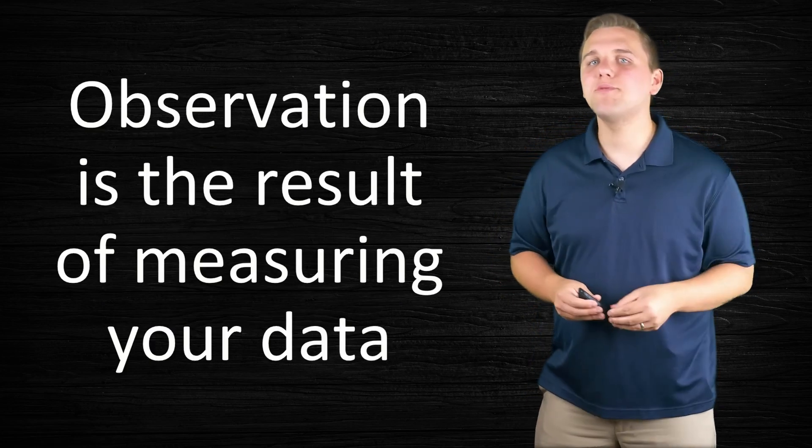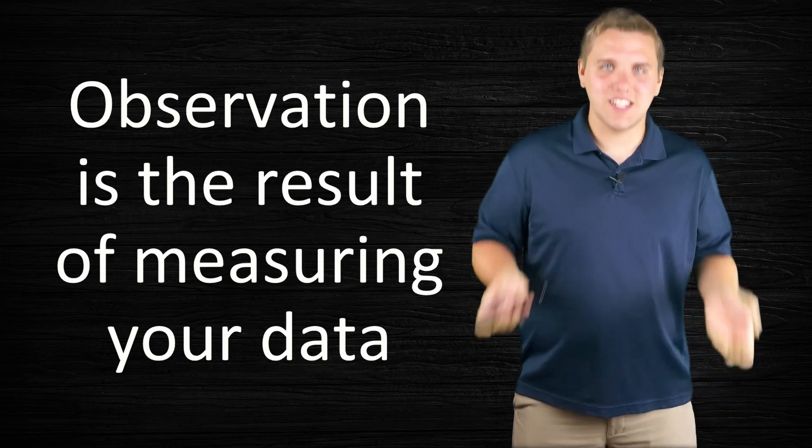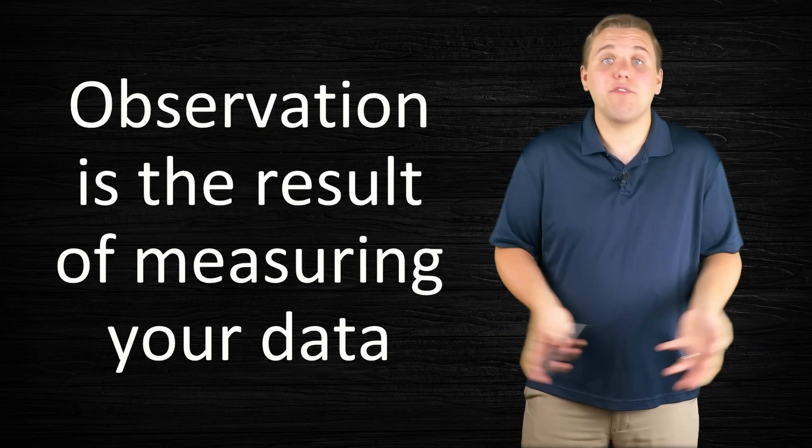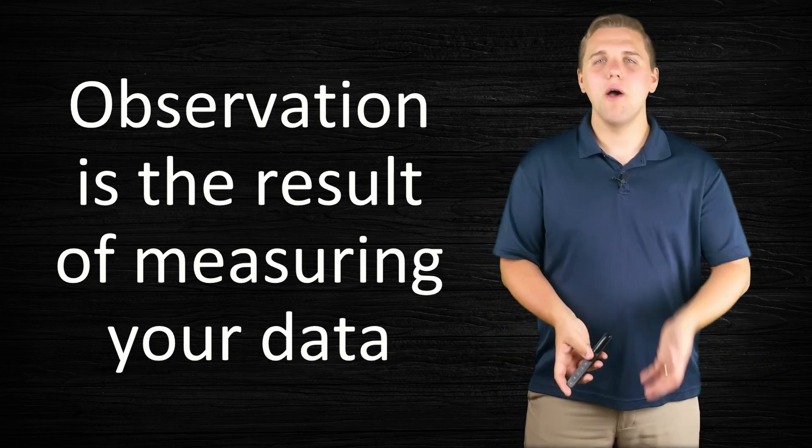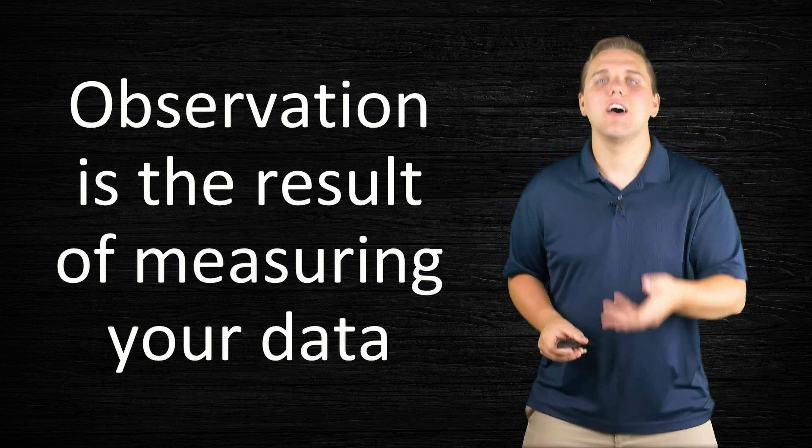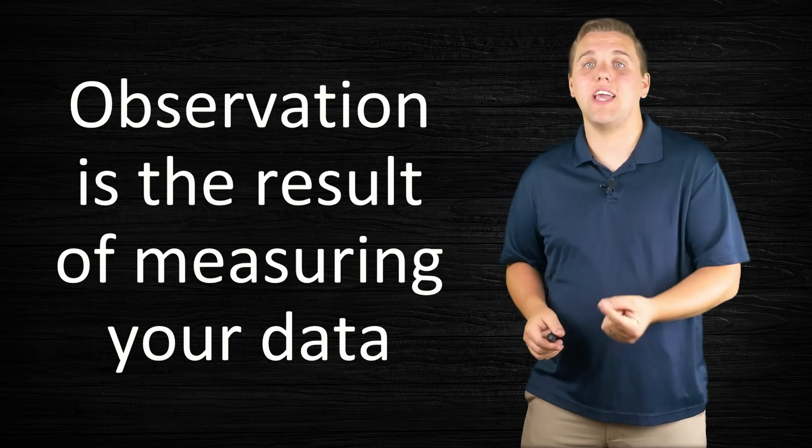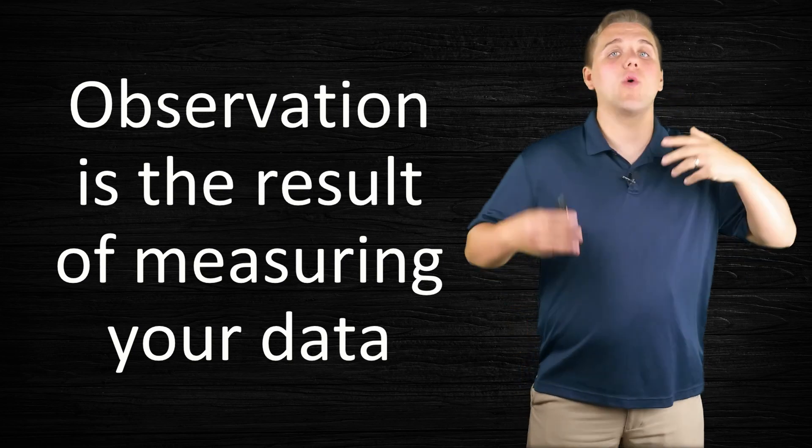An observation is the result of measuring your data. Now you might say this is a statistic, and by itself it actually is a statistic. But in general, an observation is when you analyze a sample size of 1. So you have a group of objects, in this case, that is size 1, and you observe it.